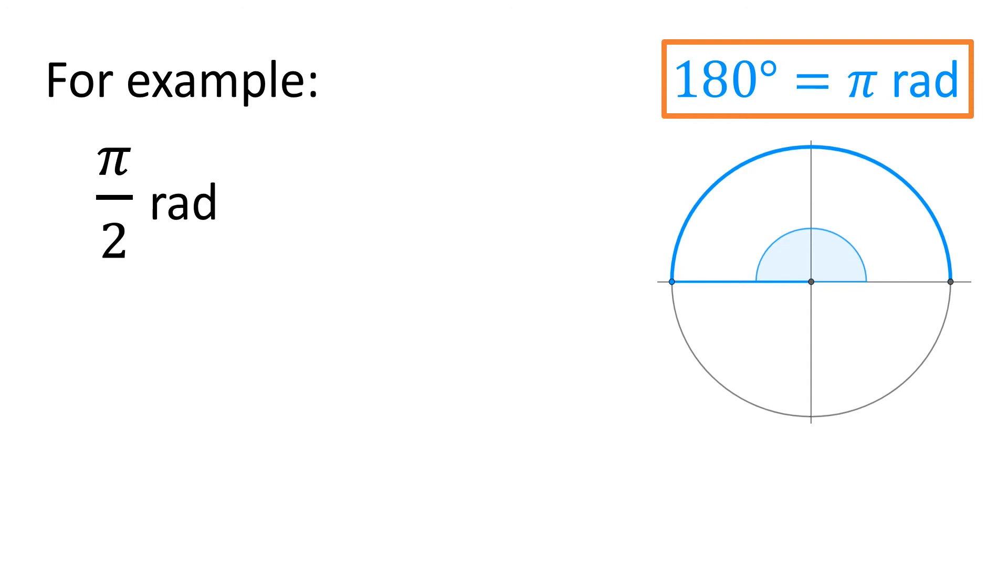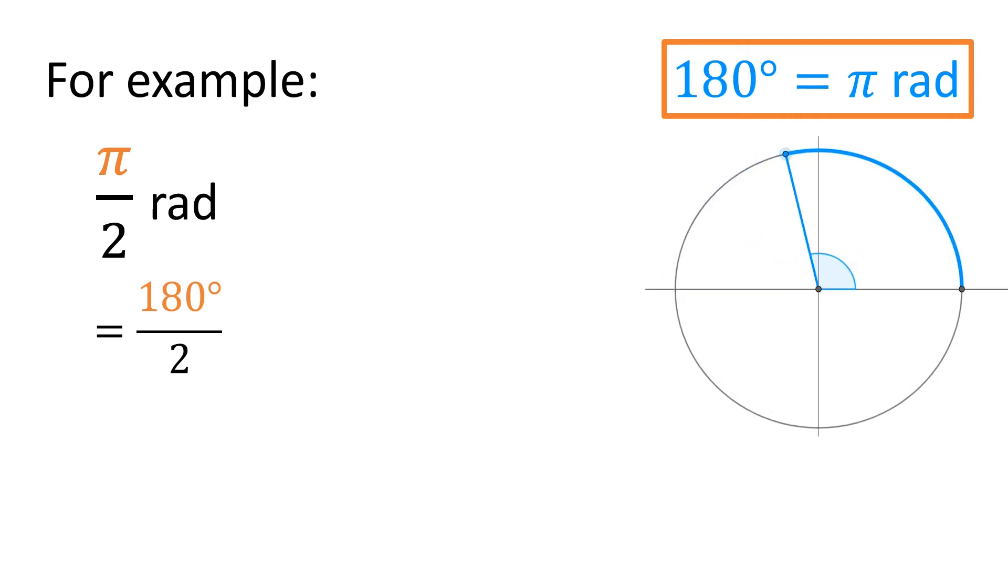So, for example, π/2 radians would be 180 divided by 2, that's 90 degrees.